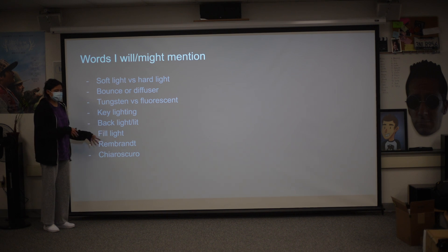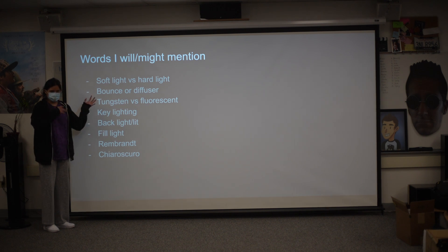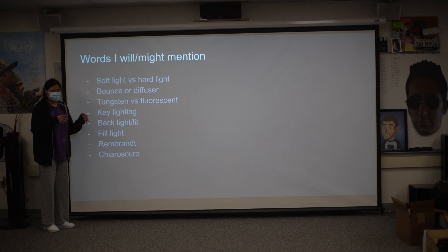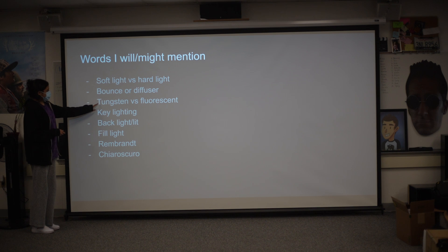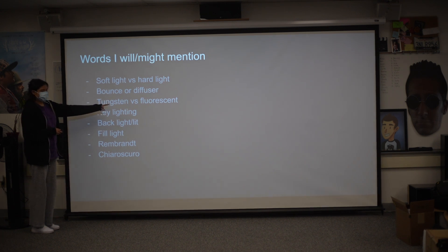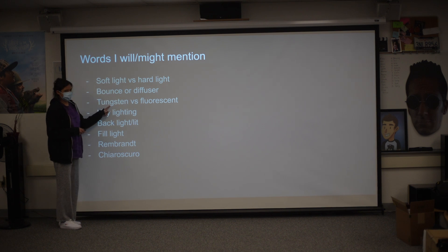You see chiaroscuro a lot with, let's say it's a party with a bunch of people but they're all blacked out, and the colored lights are on the main characters and all that. And then there's tungsten versus fluorescent — fluorescent gives off a cool lighting, tungsten is warm lighting.